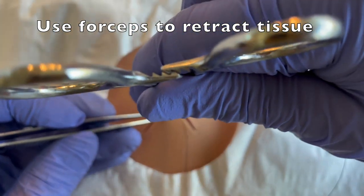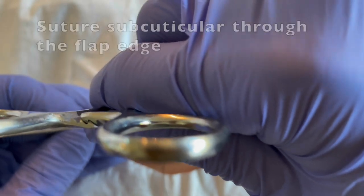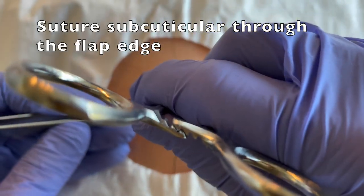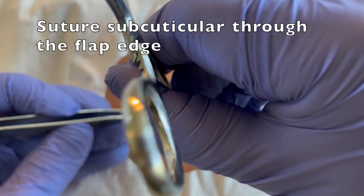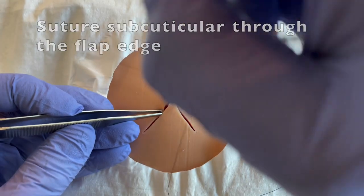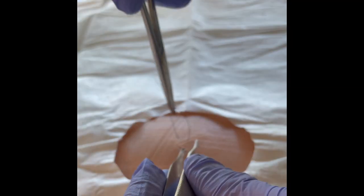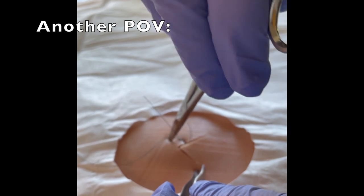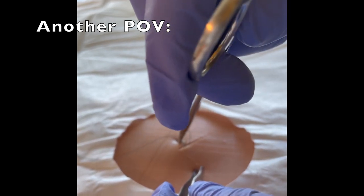You'll use your forceps to retract that tissue edge and you'll suture subcuticular through that flap edge. This is a bird's eye view of what your hands will look like. Here's another point of view to demonstrate how this technique will look.